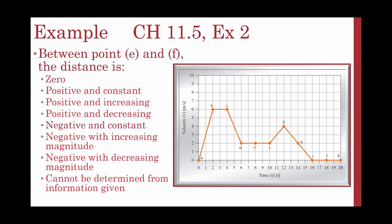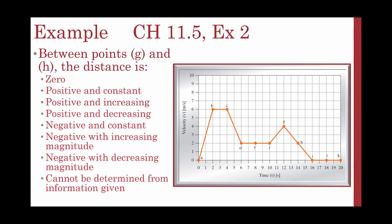From points E to F, we're asked about distance, which is the area under the curve. Our distance is positive and increasing. From F to G, our distance is also positive and increasing because distance is the area under the curve. From points G to H, we have a negatively sloping line. The distance is still positive and increasing — it's just increasing at a decreasing rate.